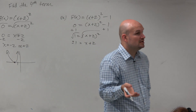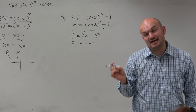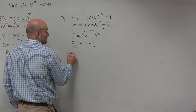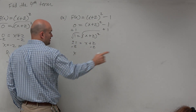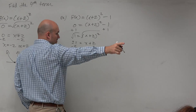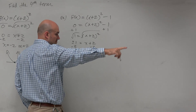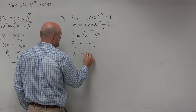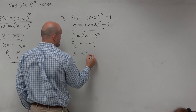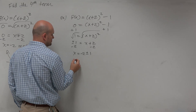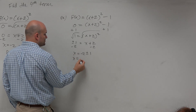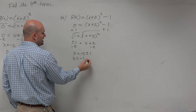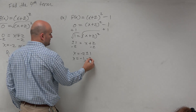So now, to isolate the x, I'm going to need to subtract by 2. Therefore, x is now equal to negative 2 plus or minus 1. So x is equal to negative 2 plus 1, which is negative 1, and negative 2 minus 1 is negative 3.